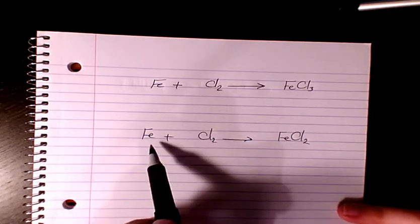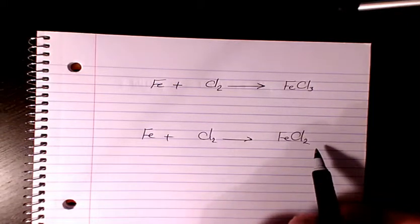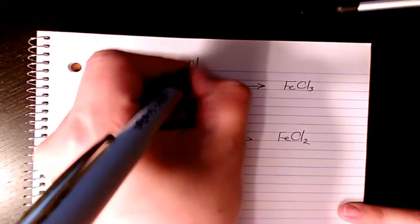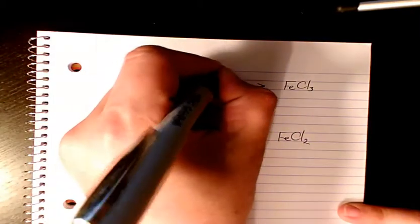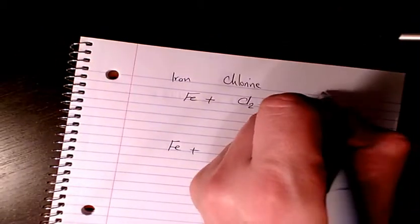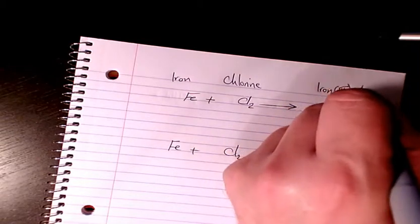And in the second reaction we have Fe plus Cl2, it's going to give you FeCl2. So if you have iron, you have chlorine, it's going to give you, this one is called Ferric Chloride or also Iron 3 Chloride.